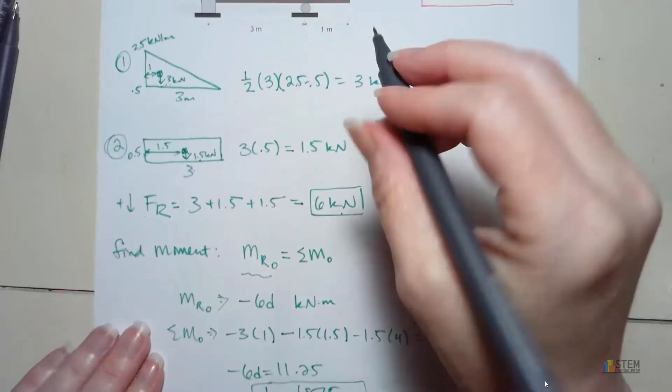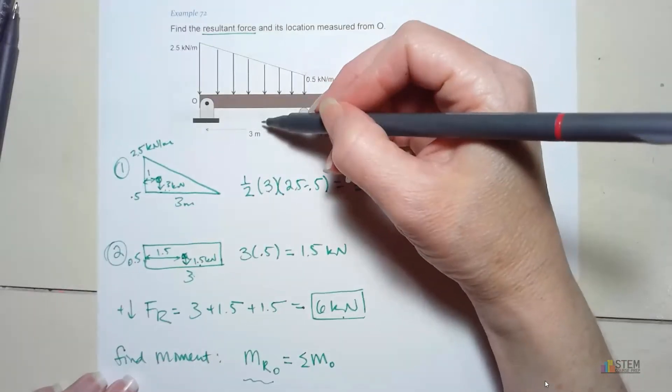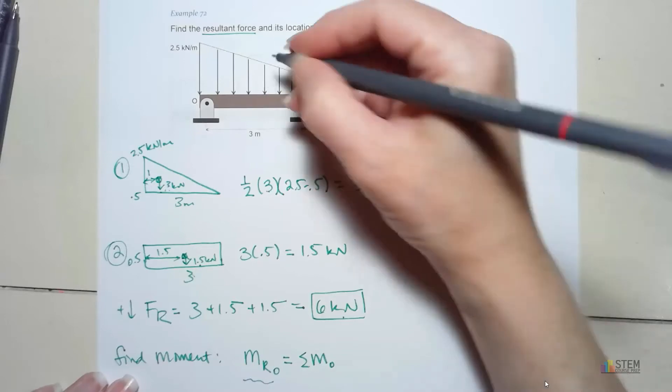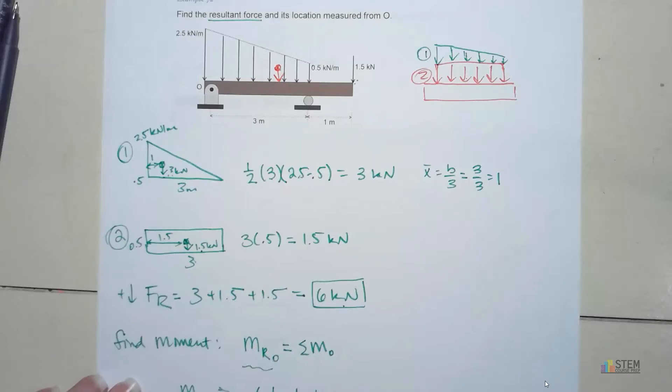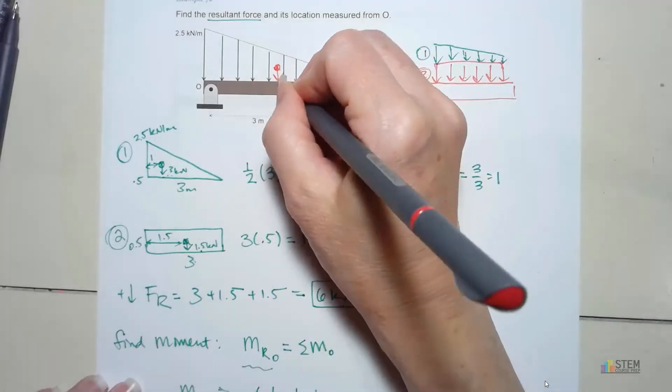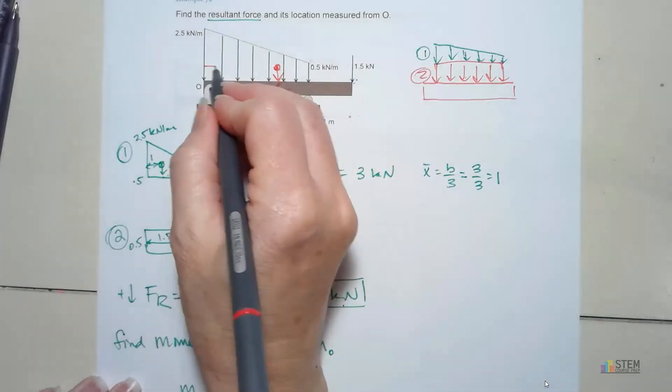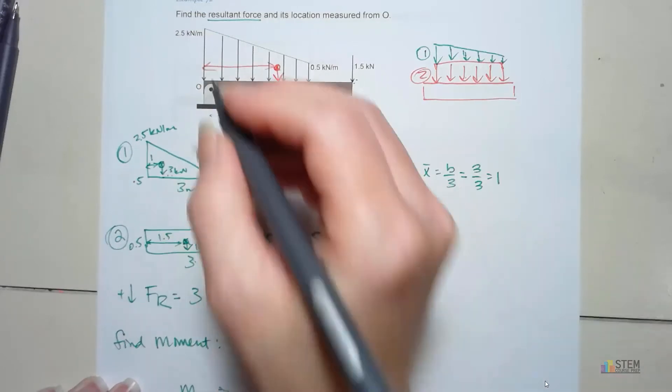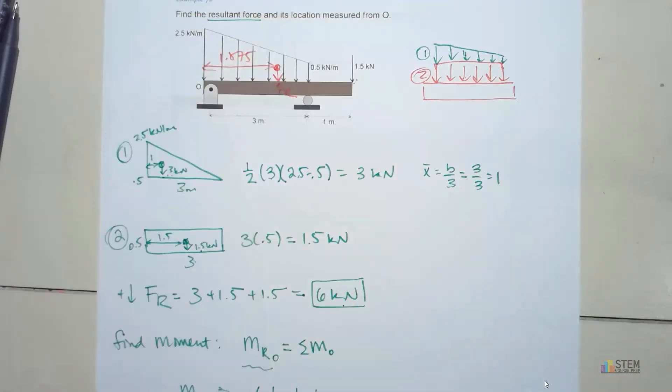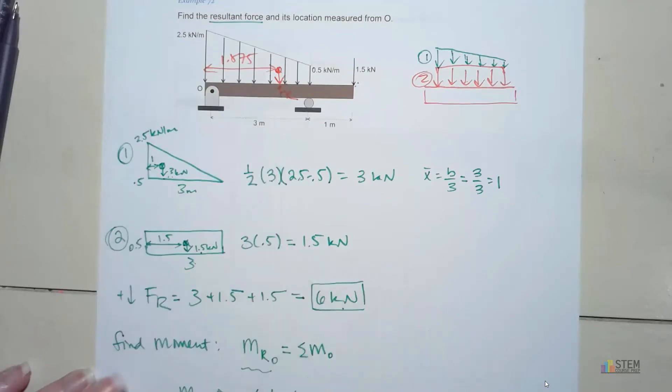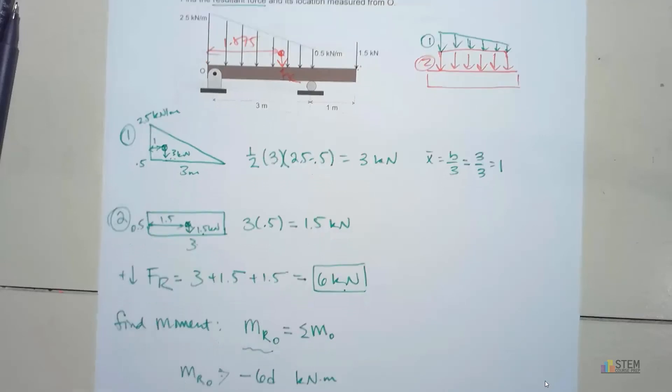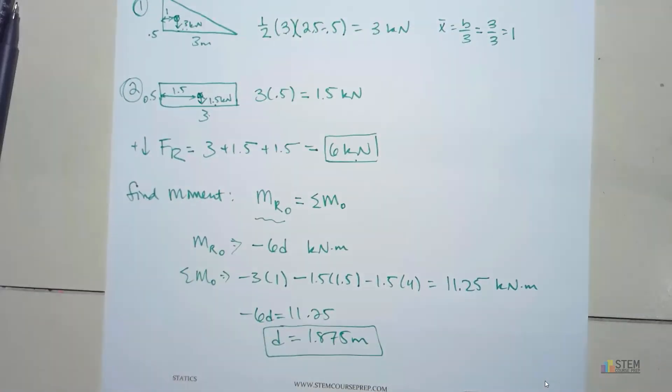Alright, so if we draw that on here, if this is 3, let's say it's right here. So it's going to act at that point. Right there. And this distance here is the 1.875. Okay, so if you replace all of these forces with just this one resultant force, put it at this location, you're going to have the same system as you start with.